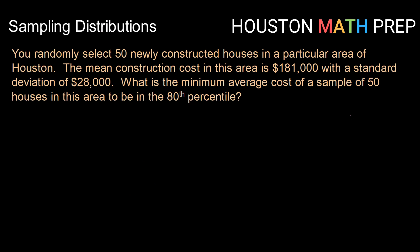Alright, one more for us. Let's say that you randomly select 50 newly constructed houses in a particular area of Houston. The mean construction cost in that area is $181,000, with a standard deviation of $28,000. What is the minimum average cost of a sample of size 50 houses in this area to be in the 80th percentile? So because I'm working with a sample, I'm going to be using my central limit theorem here, my sampling distribution of sample means calculations. So I'm going to start by finding mu of X bar and sigma of X bar.